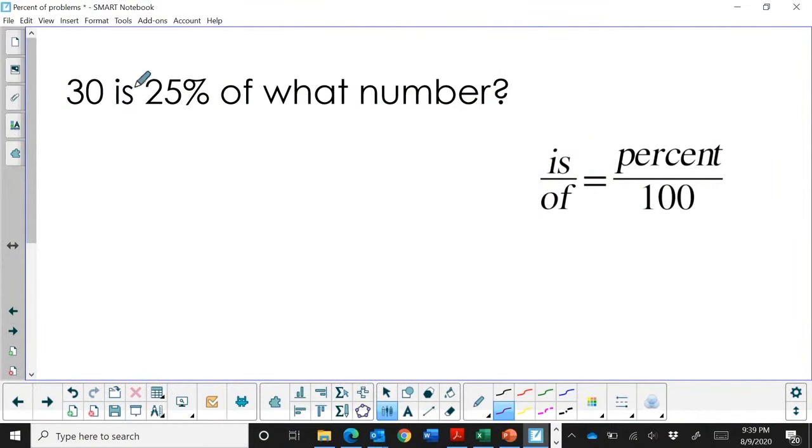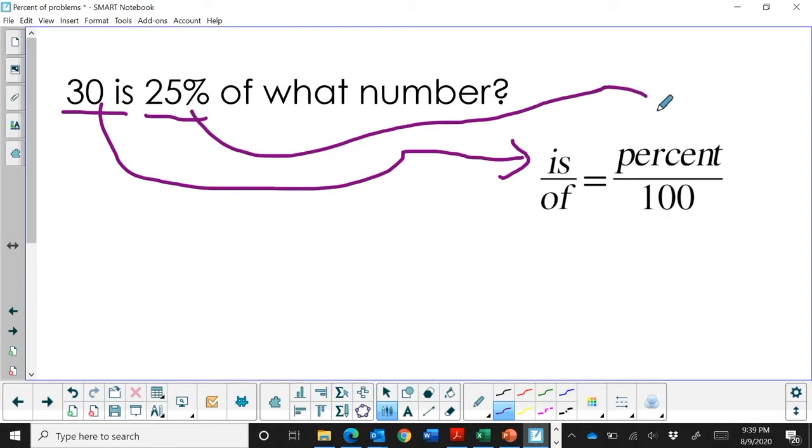30 is 25% of what number? So we've got 30 is 25% of what number. The 'of' is our unknown.